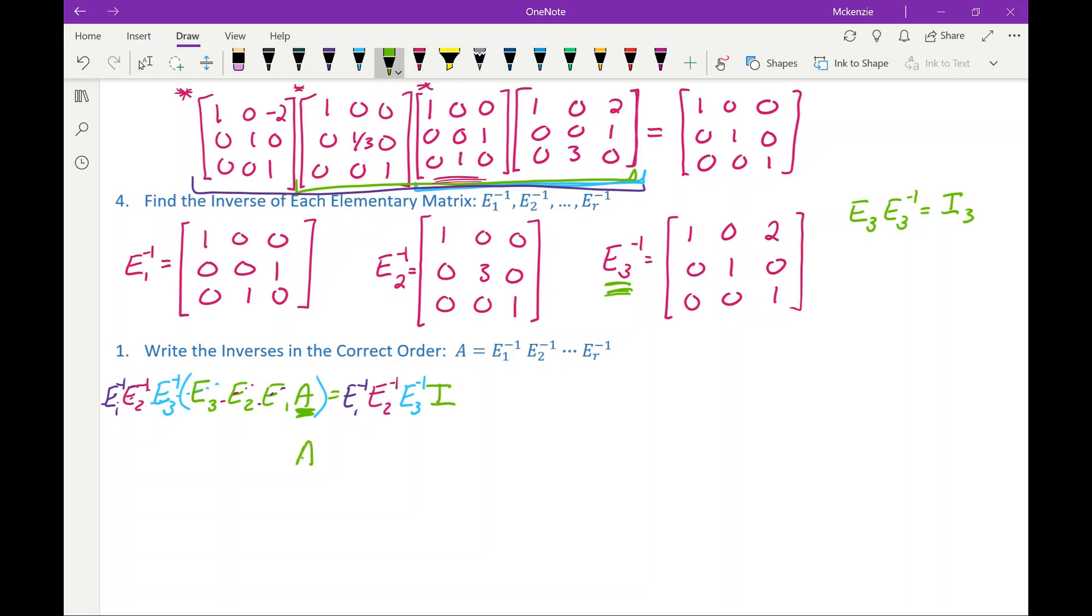So all we're left with on the left side is A. And on the right side, well, we could leave the identity matrix there. But it's kind of like multiplying by one. It'd be like leaving one when you're writing something out as a product of numbers. So A is the product of those three elementary matrices in that order. So if we write it out specifically, so E1 inverse was, again, the swapping of the two rows, the second and third row. E2 inverse was multiplying the second row by three. And E3 inverse was adding two of row three to row one. So if you multiply those together, you will indeed get A. Excellent. Enjoy. And have a good one.